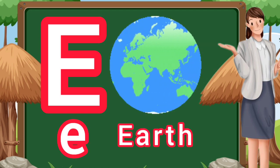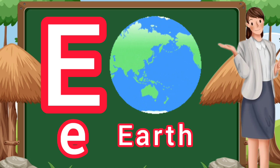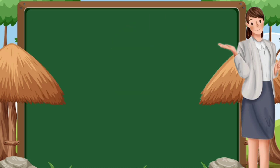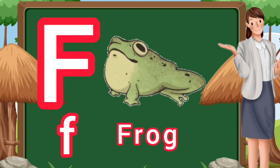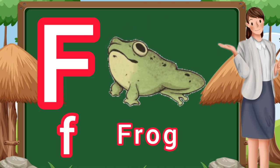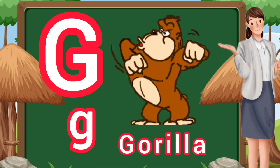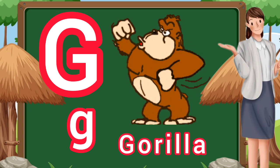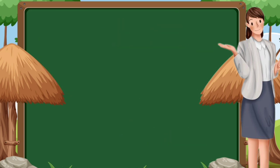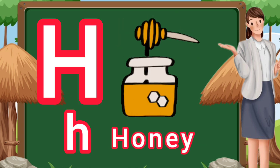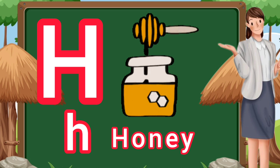E. E for earth. F. F for frog. G. G for gorilla. H. H for honey.